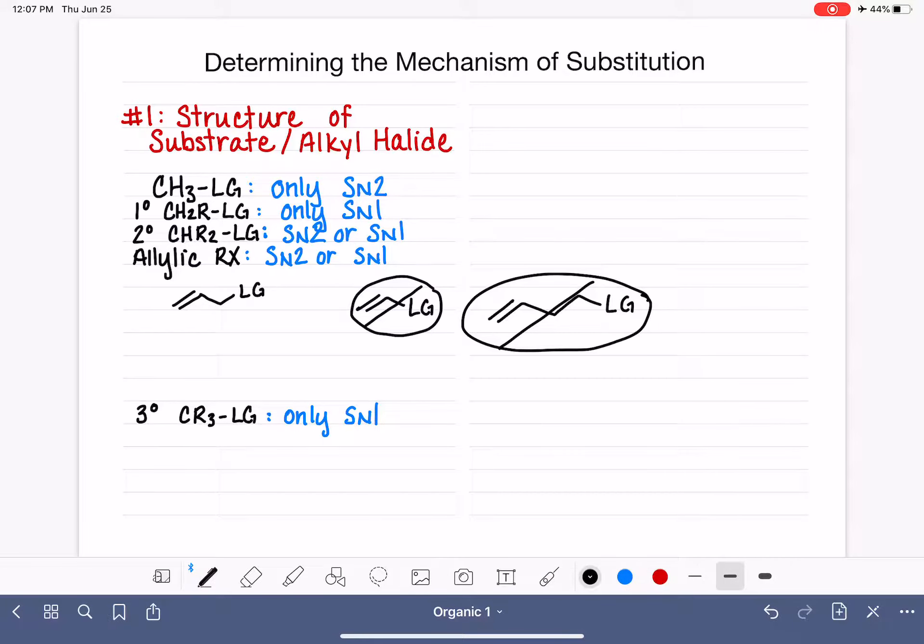And then a similar molecule is the benzylic or benzyl alkyl halide. And it also is capable of doing SN2 or SN1, either one. So if you have allylic or benzylic, then you cannot predict the SN1 versus SN2 mechanism just based on the structure of the molecule.